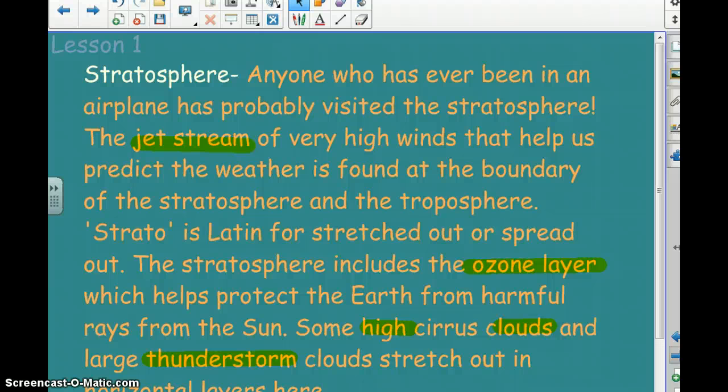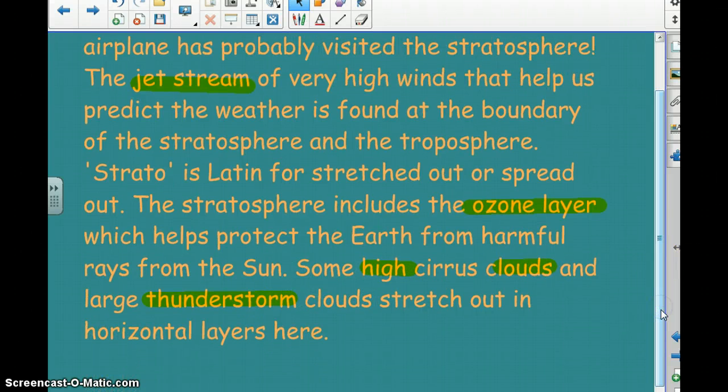So the stratosphere is the layer where, if you've been in an airplane, you've probably been in the stratosphere. The jet stream, which is basically just a fast-moving river of wind way up about seven, eight miles up, five to seven miles up, eight miles up or higher, is moving around our planet. And the stratosphere includes our ozone layer. Well, the ozone layer is the thing that protects us from the harmful rays of the sun. Sometimes clouds can get up that high and large thunderstorms can get that high, but not all the time.